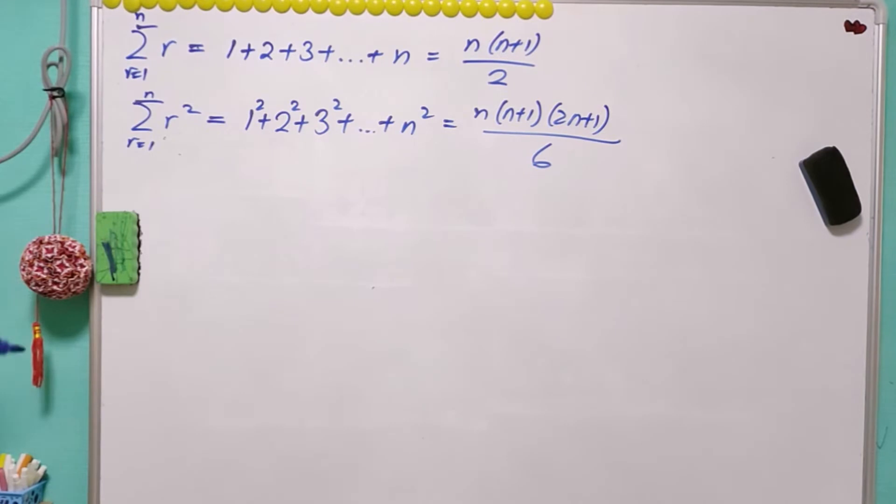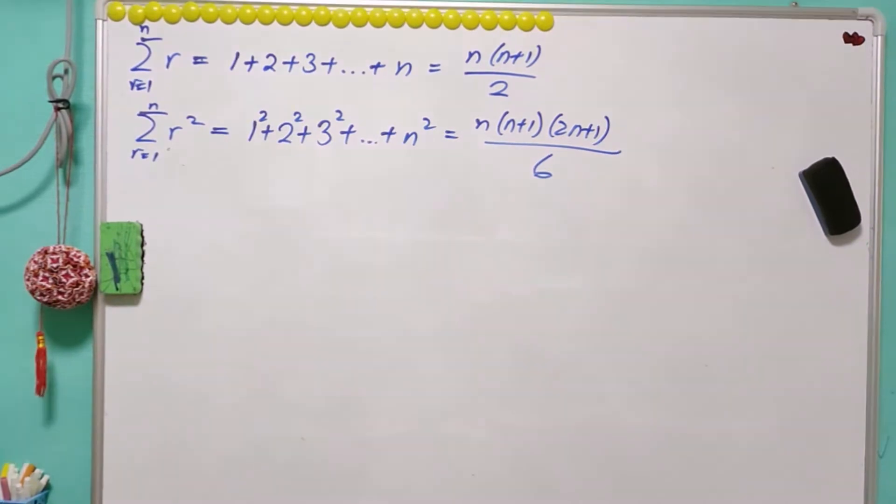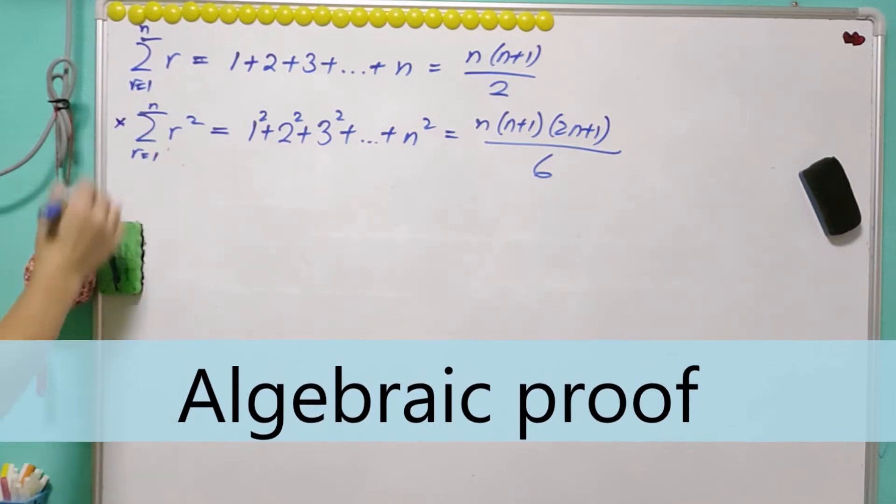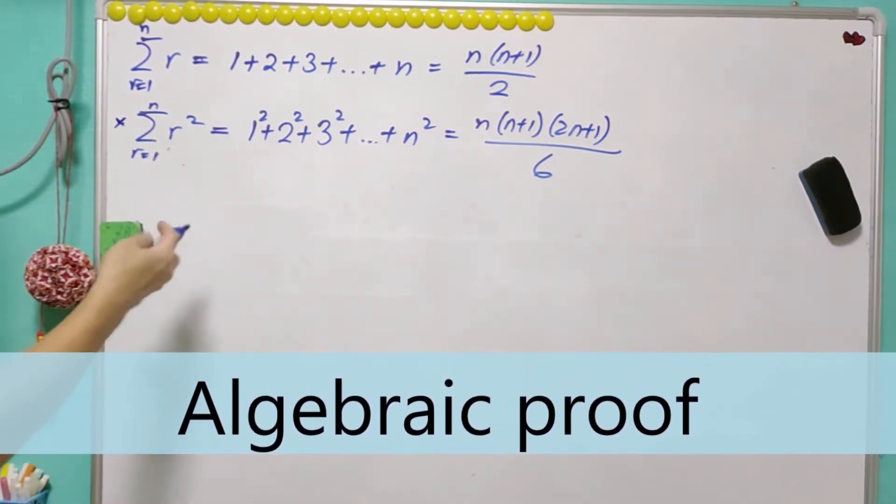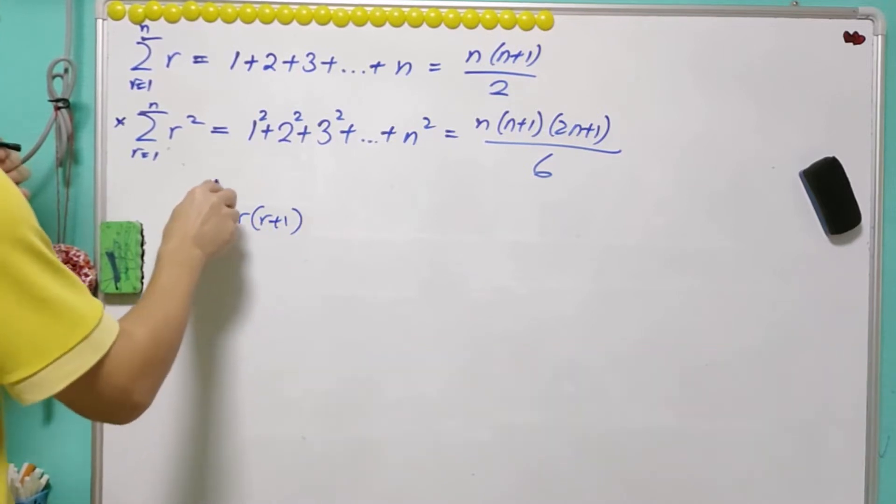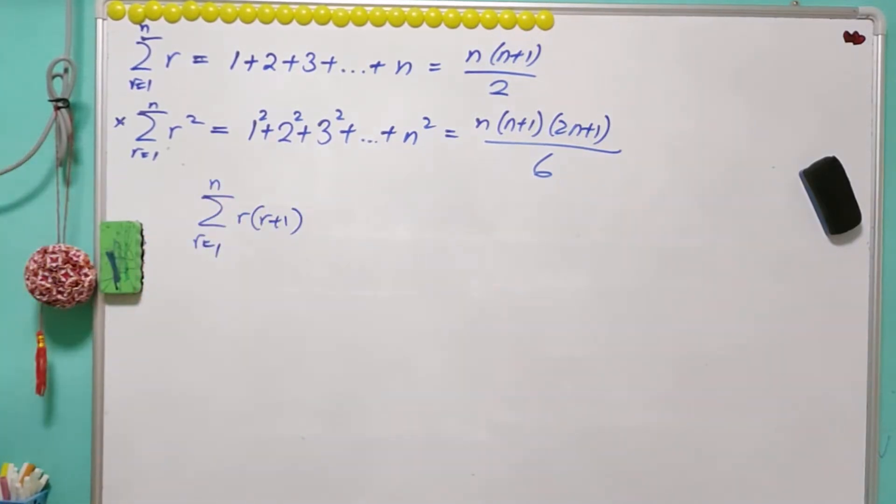So I'm going to give you a few different proofs. We're going to do a little bit of algebra, but instead of getting this, we are actually going to get summation r(r+1), from r equals 1 to n. This is actually a lot more easier.